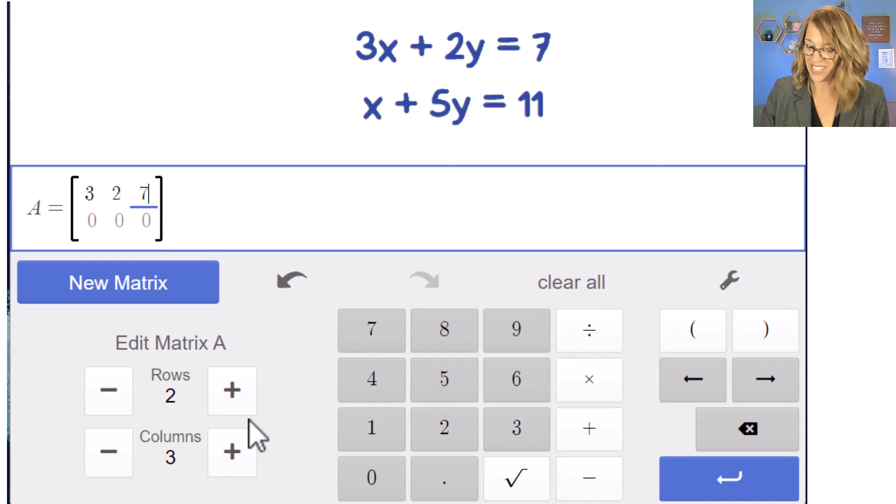So three, two, and seven. And then for the next equation, I've got one, five, and whoops, one, backing up, five, and 11.